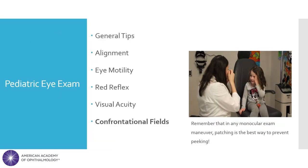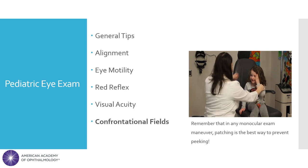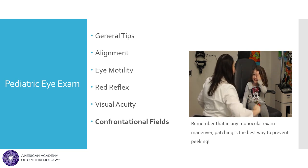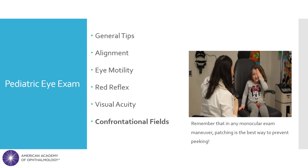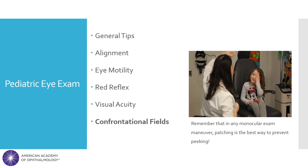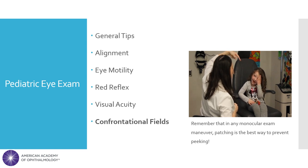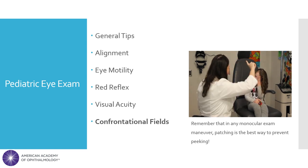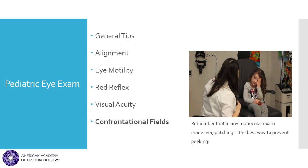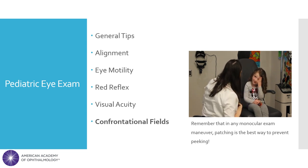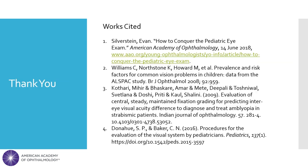Confrontational visual fields assesses a patient's peripheral vision. In a cooperative patient, this is done by asking the patient to keep fixated on one object centrally and count the number of fingers in each quadrant of the periphery. The key points of this exam are to do one eye at a time, ensure that your fingers are equidistant from you and the patient and that you are still able to see the fingers in your own periphery, and use one, two, or five fingers, as three and four can sometimes be difficult to distinguish. Thank you for watching this video on the pediatric eye exam. Please rewatch and rewind as many times as necessary to understand the maneuvers and relevant findings.